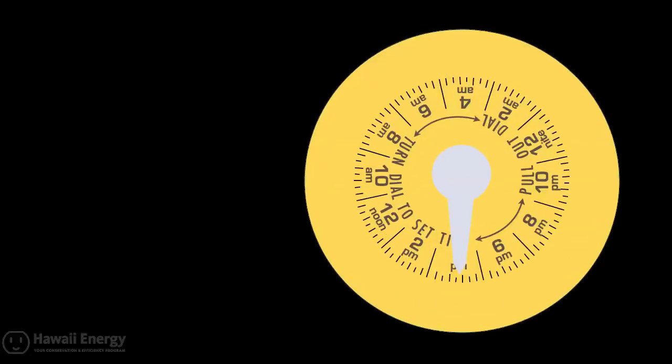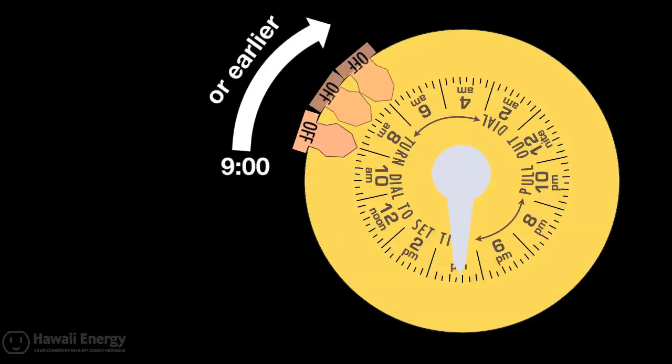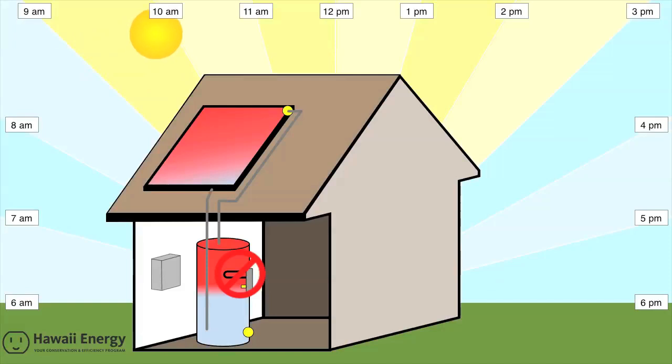At a minimum, Hawaii Energy strongly recommends you have an off-tripper fastened to the dial no later than 9 a.m. This will guarantee your system won't use electricity during the solar day. Better yet, if you decide to keep your timer manually shut off, having this off-tripper installed will ensure that your timer cannot be accidentally left on for more than a 24-hour period.